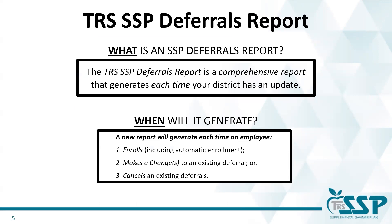Before we dive into the how-to of DC reporting, we need to look at the TRS SSP deferrals report and understand why it is such an important tool. The SSP deferrals report is a comprehensive report that generates each time your district has an update — every time an employee enrolls in the SSP, makes a change to their existing contribution amount or category, or cancels their existing deferral. The SSP deferrals report serves as a salary reduction agreement between your employee, TRS, Voya, and you as the employer. It tells you who is enrolled, how much they elected to defer, which contribution category they selected, and when their elections are effective — and it will even tell you if an employee has canceled their election.